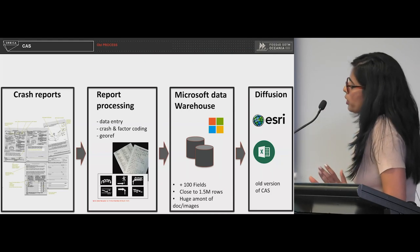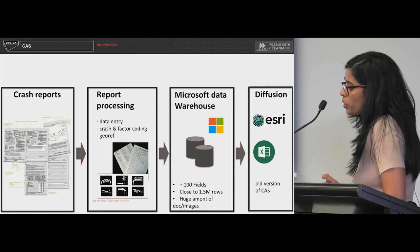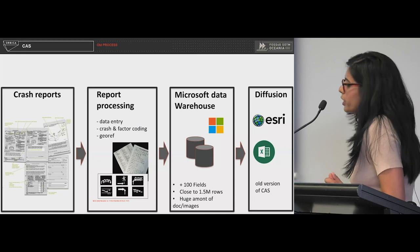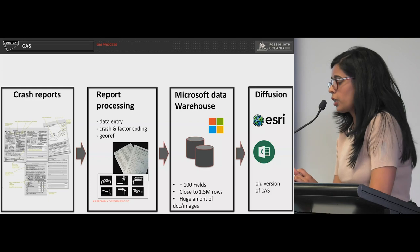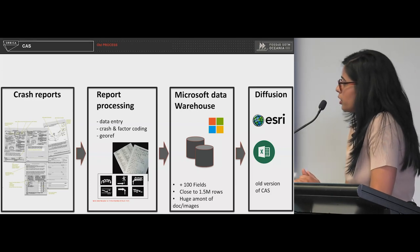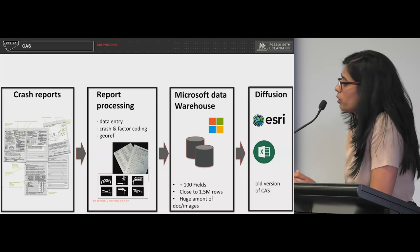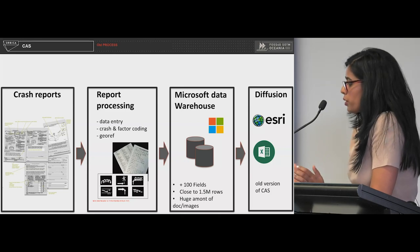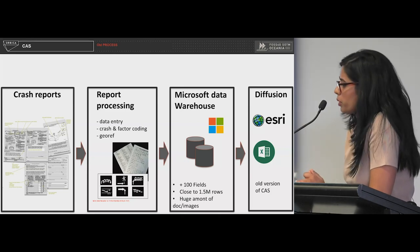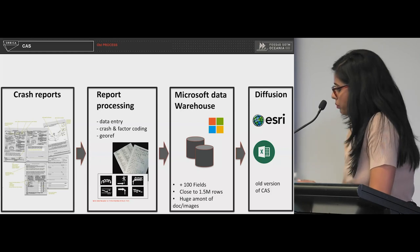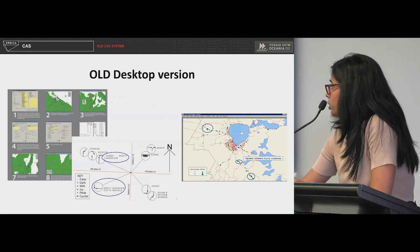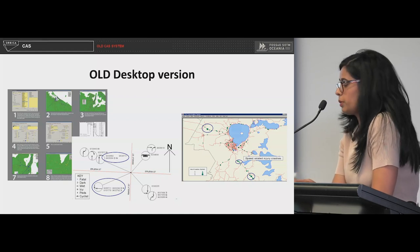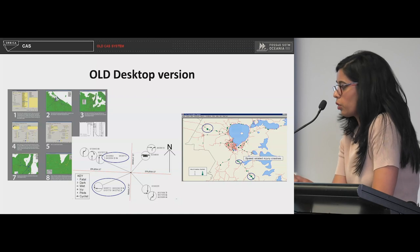This is how the old CAS — the Crash Analysis System — process worked. Information was extracted from traffic crash reports, which was then manually fed into a data warehouse. There was a lot of manual data entry, including manually geocoding all crash locations. That information in the data warehouse was the source for the old CAS, which was sitting on top of Excel. This is how the older version looked.